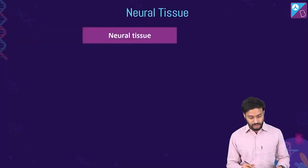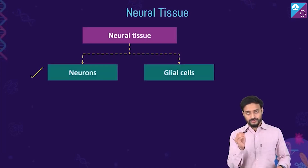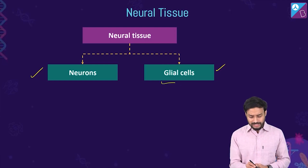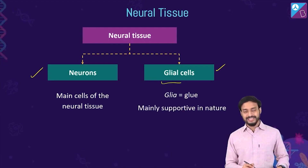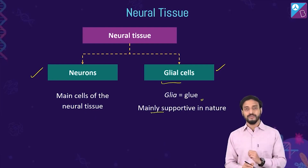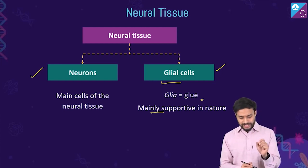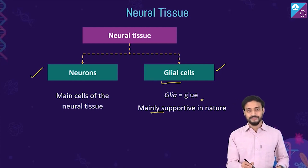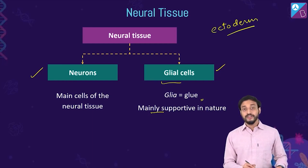Neural tissues are composed of neurons and glial cells. Neurons are the main cells of the neural tissue, while glial cells — the word 'glia' comes from 'glue' — are mainly supportive in nature. Neural tissues develop from the ectoderm germ layer.